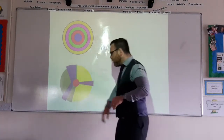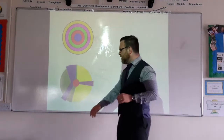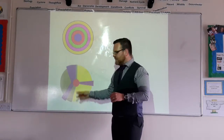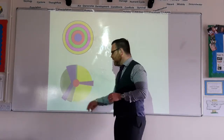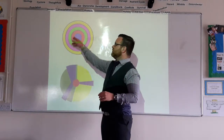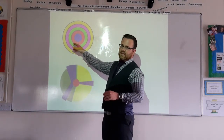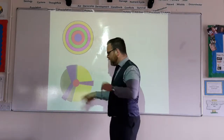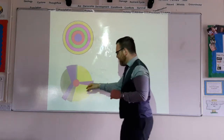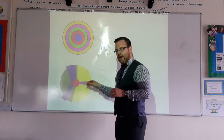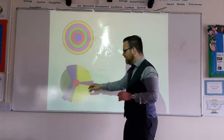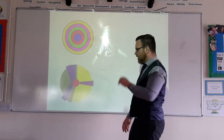That was followed by the Hoyt model. Hoyt came up with the idea that you've got the same sort of zones but rather than being in circles, he said they were actually in sections. Still have the CBD in the middle, but then you've got an industrial zone — much like this red zone — your inner city where your factories would have been. He's got two zones of housing and then a band of high-class detached housing running right from the edge of the CBD out towards the rural-urban fringe.